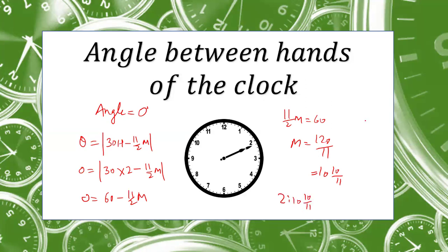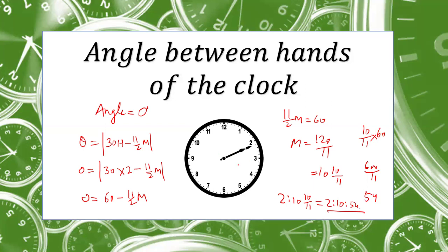Converting 10/11 minutes into seconds: (10/11) × 60 = 600/11 ≈ 54 seconds. So the time when the two hands overlap after 2 is 2:10:54. After every hour we can find out what time the two hands will overlap.